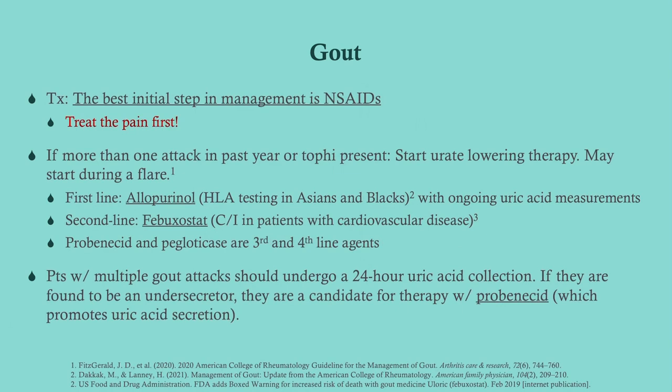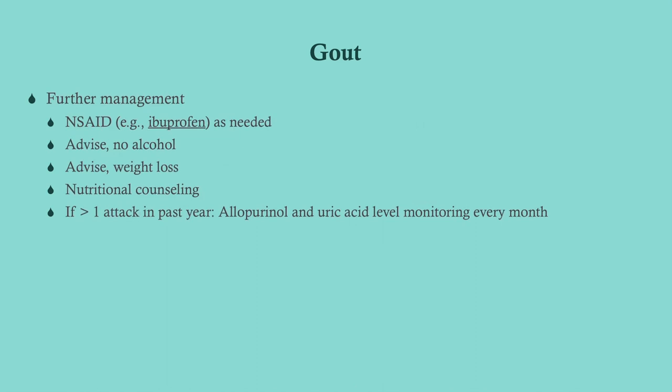If patients cannot tolerate allopurinol, use febuxostat — but note febuxostat is not good for patients with underlying heart conditions. If they can't tolerate that either, you can go to probenecid or pegloticase, but allopurinol is first line. Patients with multiple gout attacks should undergo a 24-hour uric acid collection. Further management: give NSAIDs as needed, advise on risk factors — no alcohol, weight loss, nutritional counseling on foods to avoid. If more than one attack per year, give allopurinol and monitor uric acid levels.